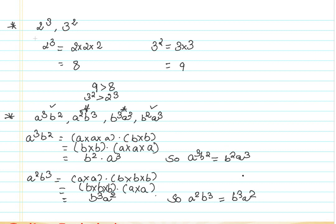So to summarize: a³b² and b²a³ represent the same number, and a²b³ and b³a² represent the same number — but a³b² and a²b³ will never represent the same number. You can further verify this by taking specific numerical values for a and b.